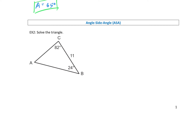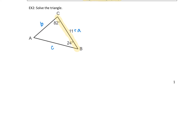The next type of problem is angle-side-angle, or ASA. In Example 2, starting at angle C, I have angle C, side A, and angle B — that's angle-side-angle. Side C is across from angle C, side A across from angle A, side B across from angle B. Since I have two angles, I can find angle A by subtracting from 180 degrees, giving me A equal to 74 degrees.